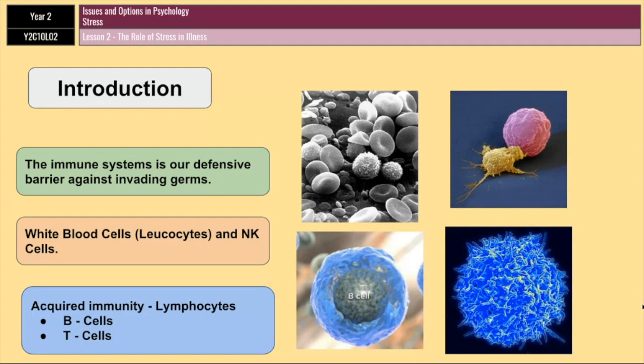Types of T cells include memory T cells, which remember antigens that your body has encountered before, and killer T cells, which destroy cells that are infected with antigens. So you've got lots of different cells that all work together to produce this first and second layer of protection that your body has, which we obviously rely on to stop us getting poorly.